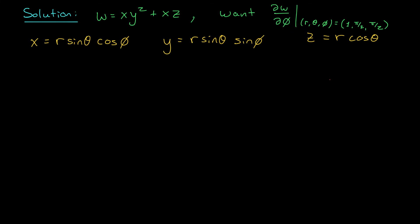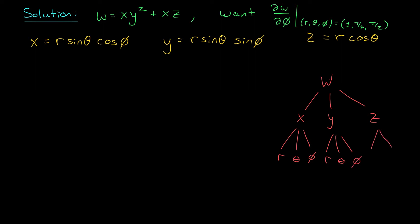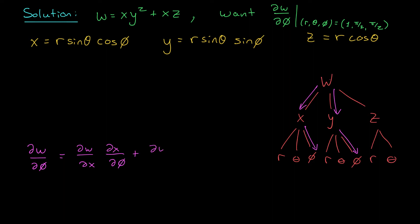So perhaps we can use a tree diagram. We have w at the top, x, y, and z at level 2. x depends on r, theta, and phi; y depends on r, theta, and phi; and z actually just depends on r and theta. Now, if we want to find the partial derivative of w with respect to phi, we're going to follow every branch of this tree from w down to phi. And notice that since z doesn't depend on phi, we don't have to follow that branch at all.